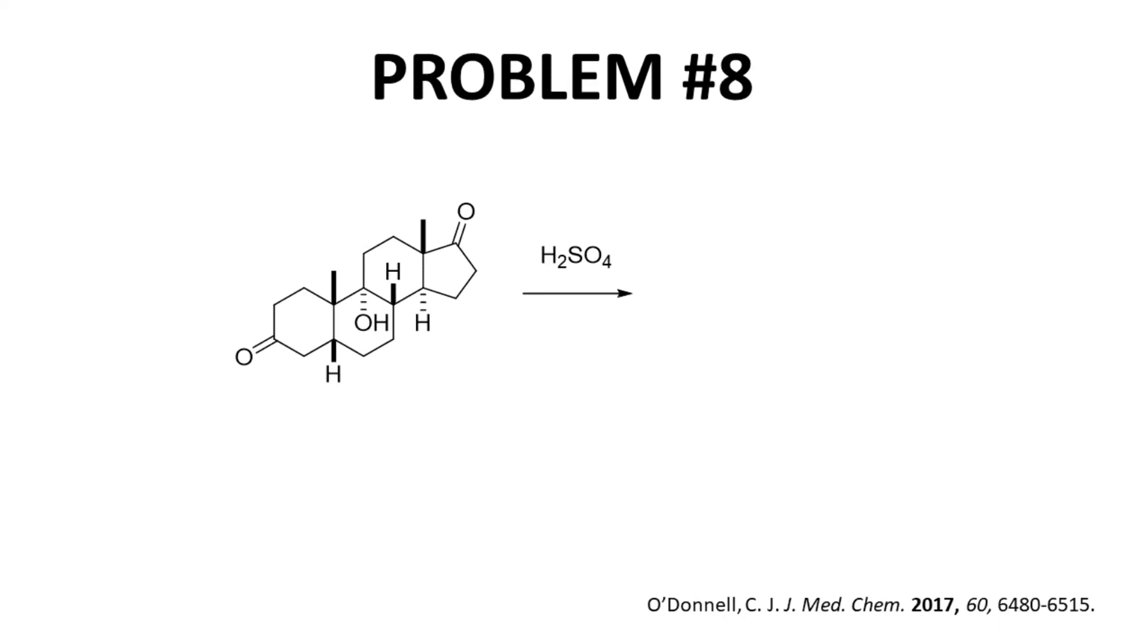And we can do that since this is a tertiary alcohol and will form a fairly stable tertiary carbocation. Instead of redrawing the structure, I'll just mark out the alcohol and put in a positive charge. When you make a carbocation in the absence of a nucleophile, you get an E1 reaction.